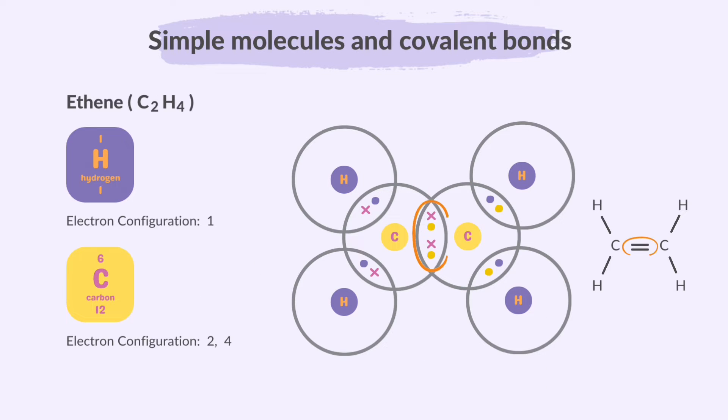In the case of covalent bonding in ethene, what's different is the presence of a double bond. This double bond means that two pairs of electrons are shared between the two carbon atoms involved in the bond.